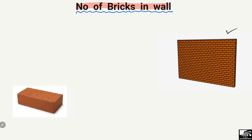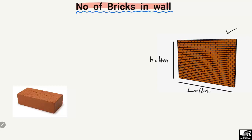We have a wall on the right side and we want to find out the number of bricks in this wall. Let's consider the height of the wall is 4 meters, the length of the wall is 12 meters, and the thickness of the wall is 0.2 meters. These are the dimensions of our wall.